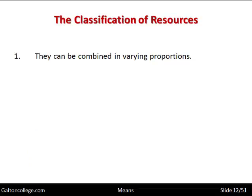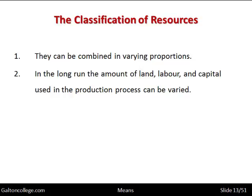The resources can be combined in varying proportions — that's a characteristic of the resources. We can have more capital and perhaps less workers, or more workers and less capital. To some extent land is substitutable as well. In the long run, the amounts of land, labour, and capital used in the production process can be varied as technology changes.